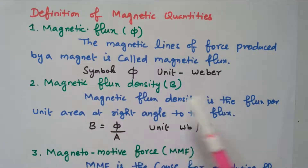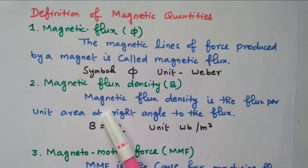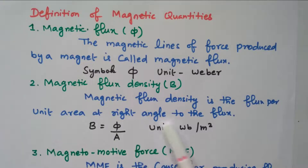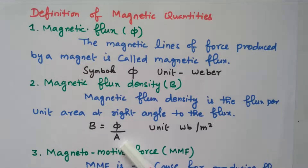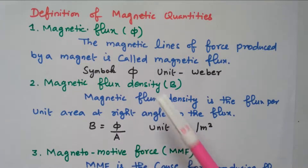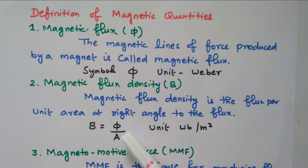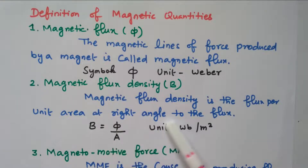Next is magnetic flux density. Density means it is divided by area. The magnetic flux density is the flux per unit area at right angles to the flux. The symbol is B, and the unit is Weber per meter squared, because B = φ/A. This area must be at right angles to the flux.